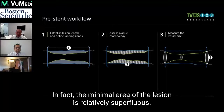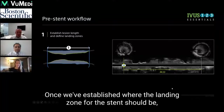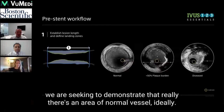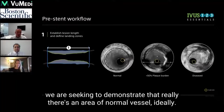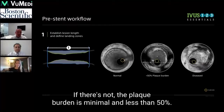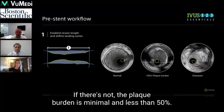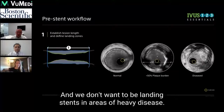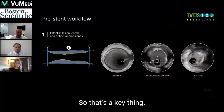The minimal area of the lesion is relatively superfluous. Once we've established where the landing zones for the stents should be, we are seeking to demonstrate that there's really an area of normal vessel, ideally. If there's not, the plaque burden is minimal and less than 50%. We don't want to be landing stents in areas of heavy disease — that's a key thing.